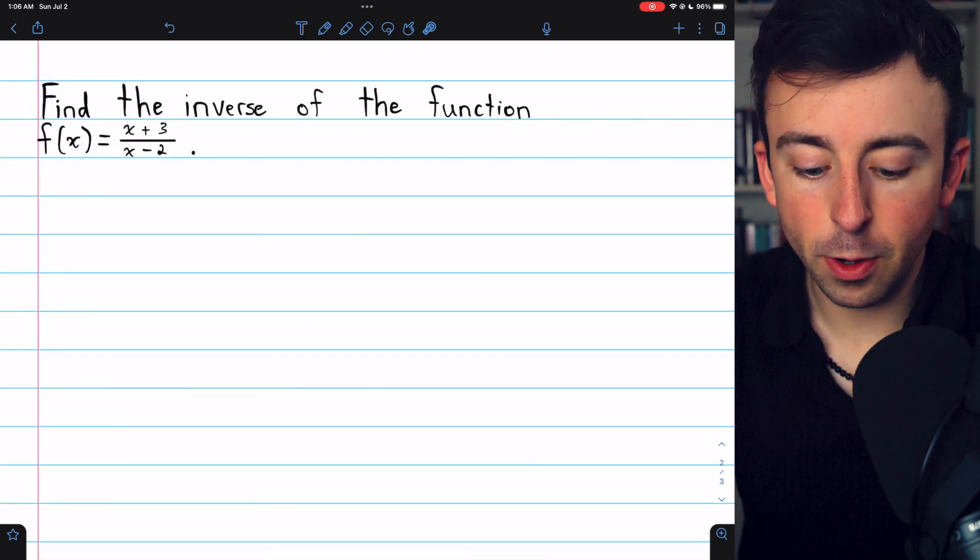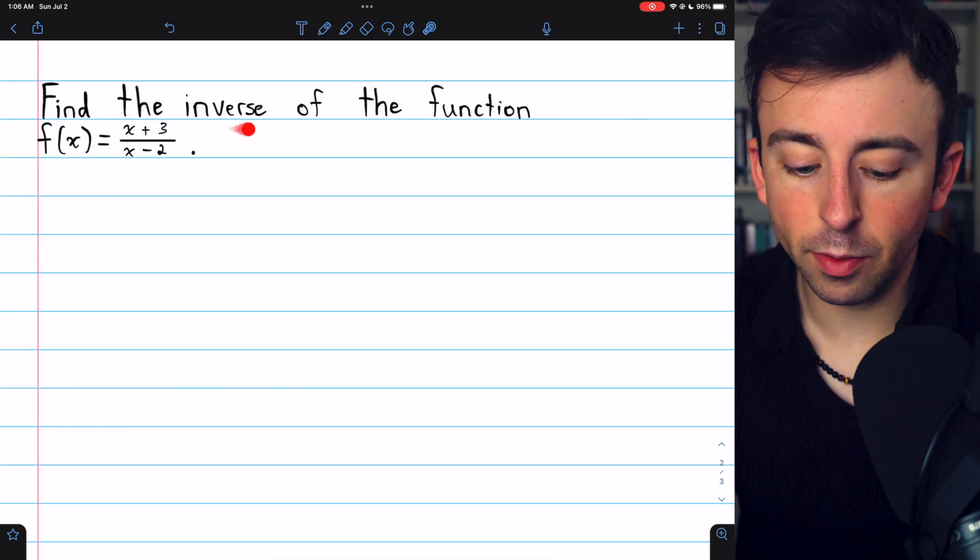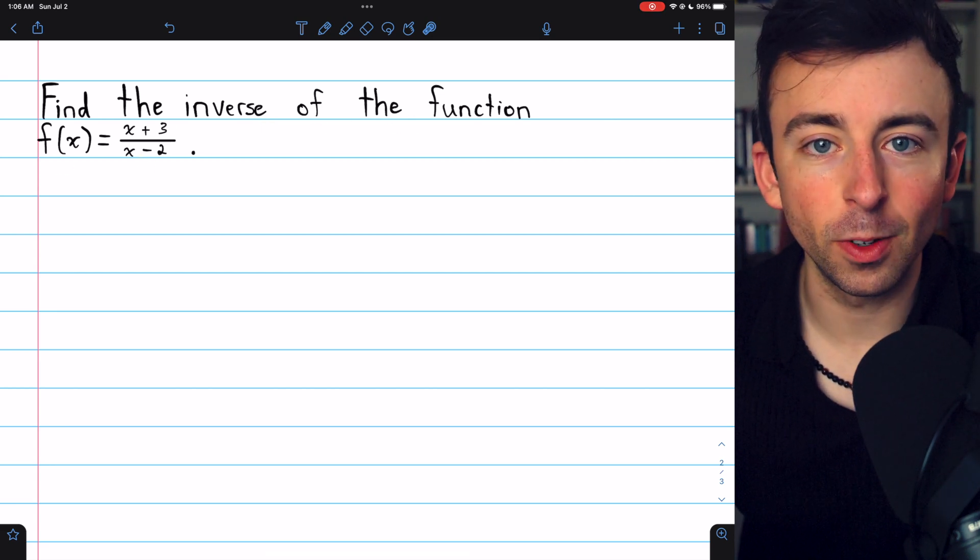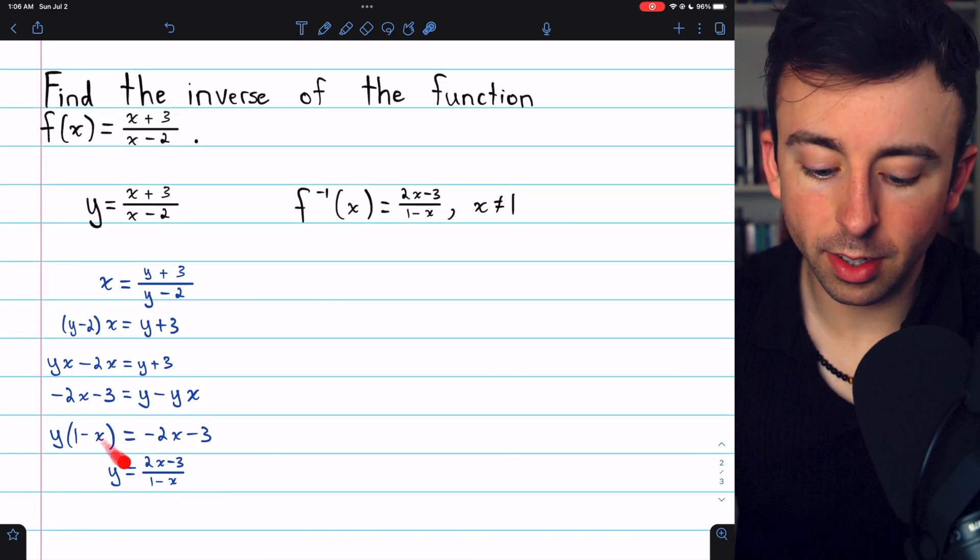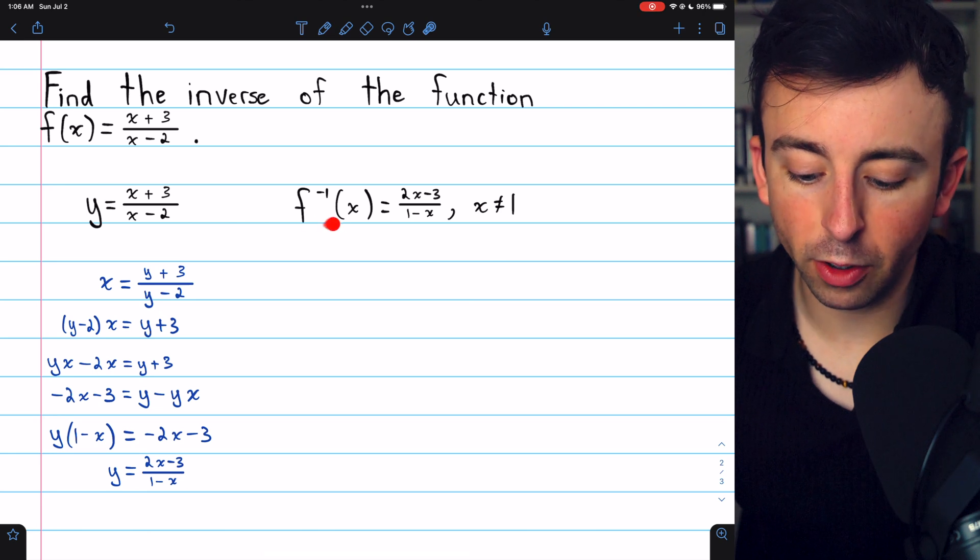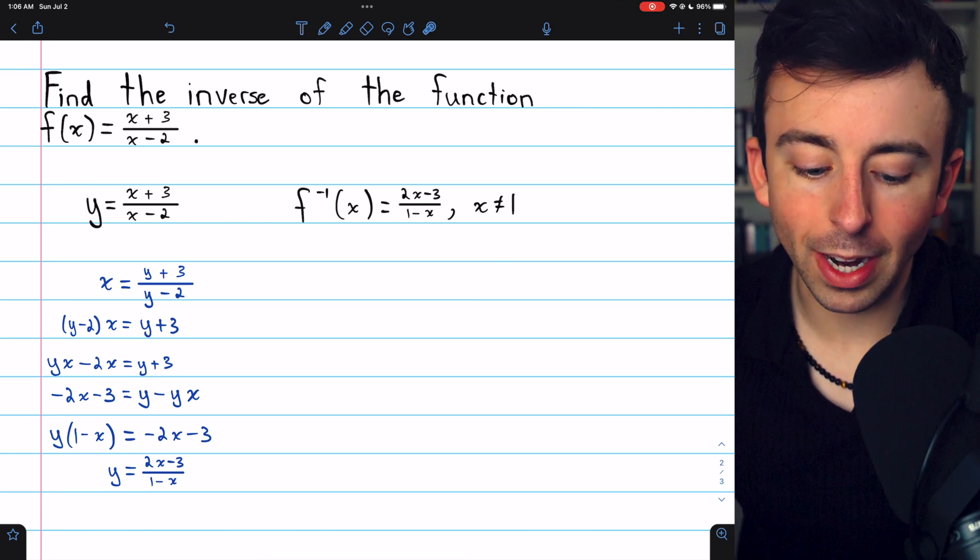Give it a try yourself. Here is a practice problem. Find the inverse of the function f of x equals x plus 3 divided by x minus 2. I'll put the solution on screen now. And here are the steps. Same exact process we just went through. The inverse function in this case turns out to be 2x minus 3 divided by 1 minus x.